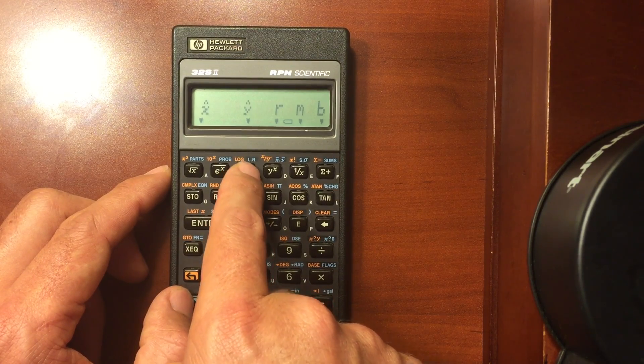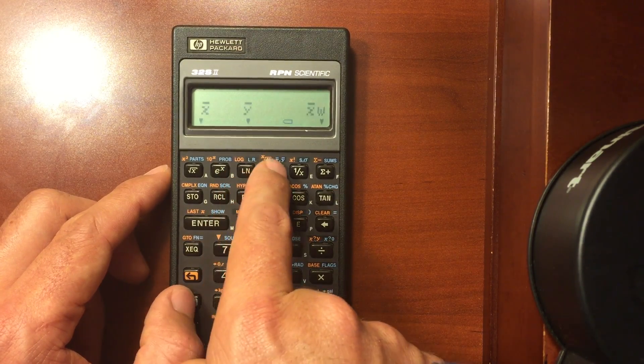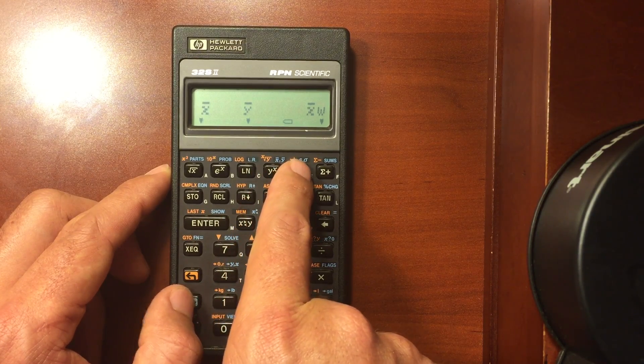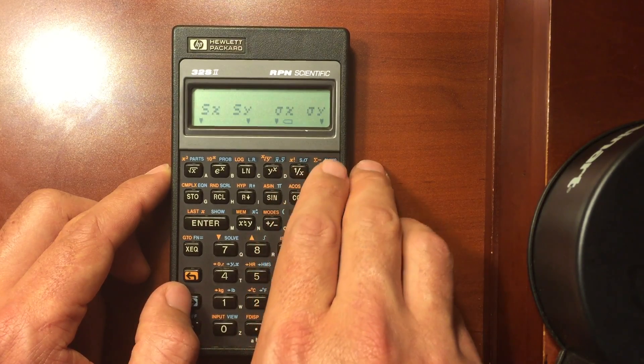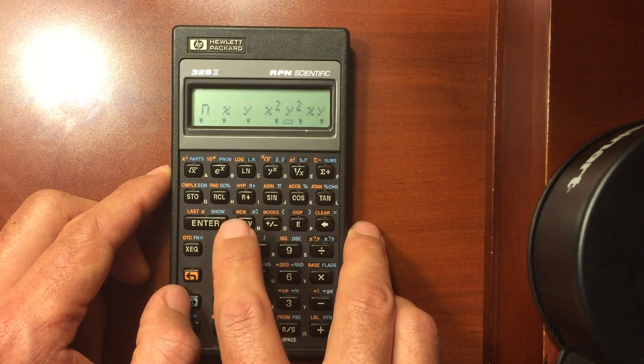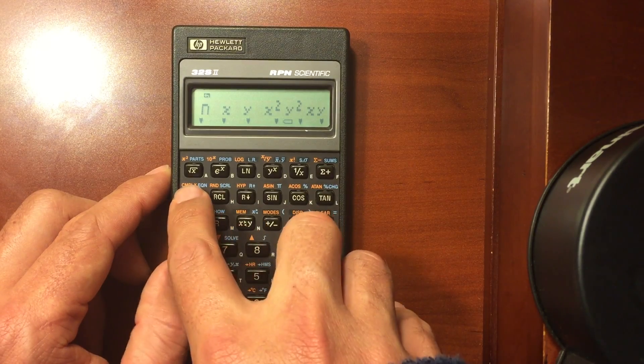So parts menu, you have a probability menu where you can find combinations, permutations, random numbers. You have a linear regression menu, your mean of your y and x's. So you can find quickly the mean, you can find the standard deviations and sums of numbers. So you can enter in a string of numbers and find its sums.